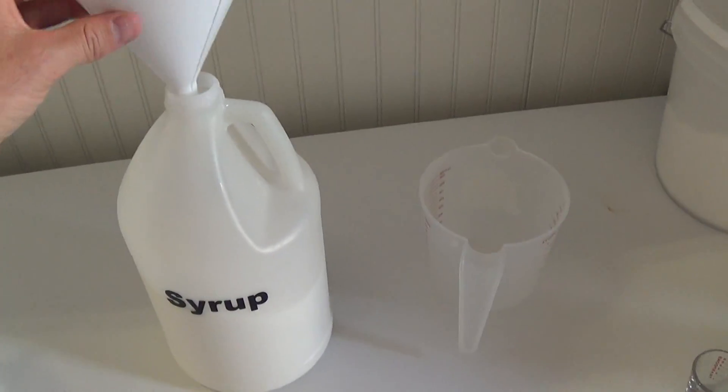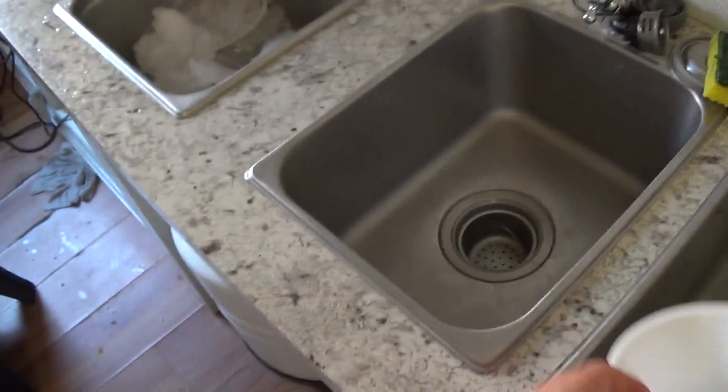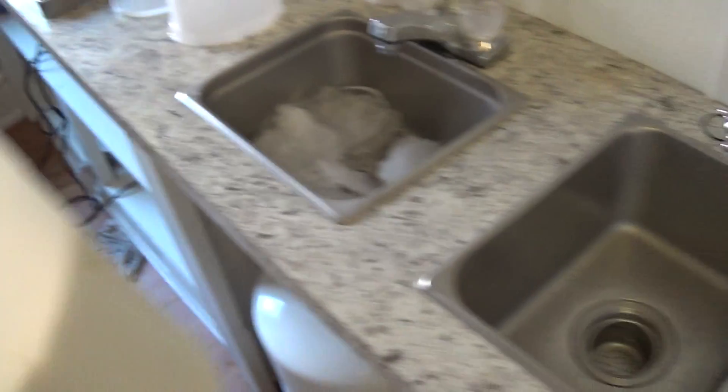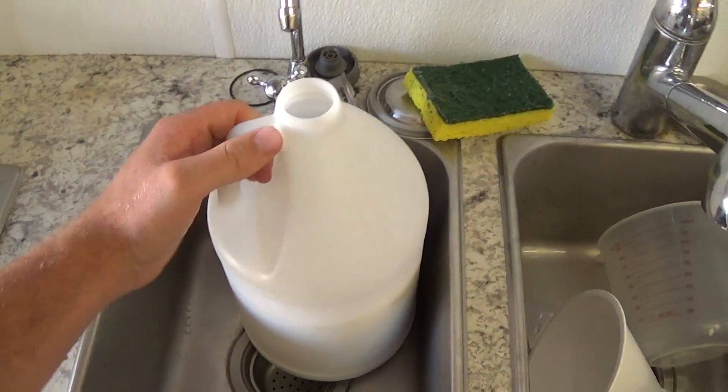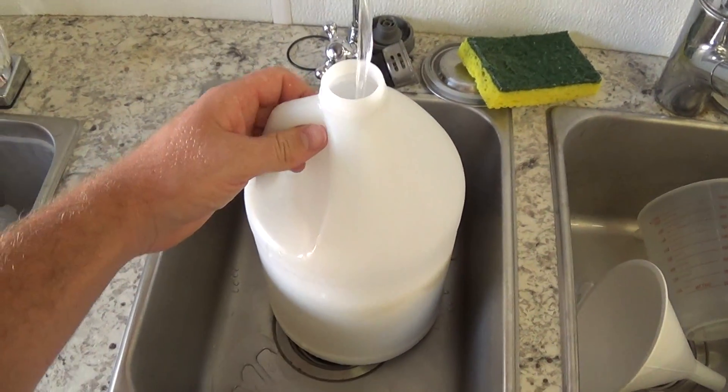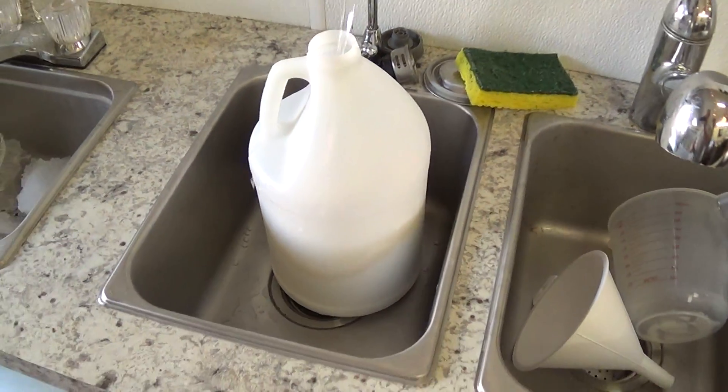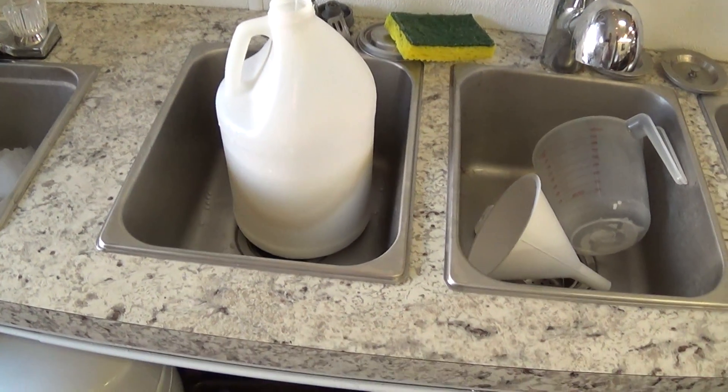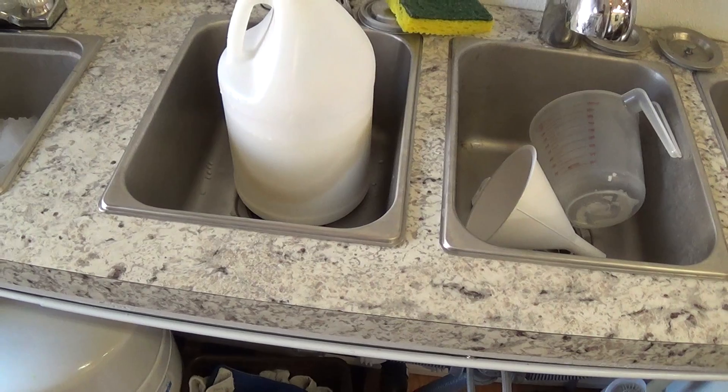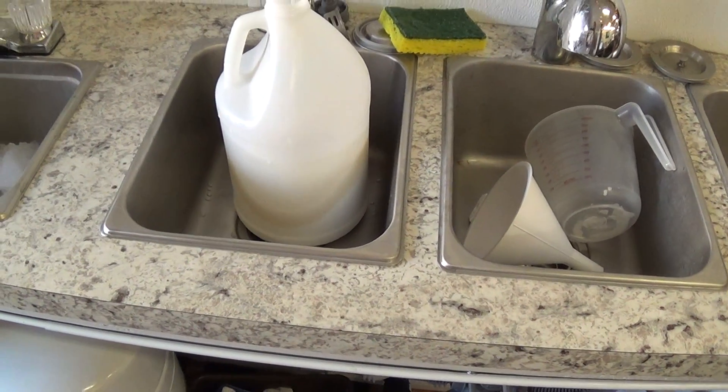So once that's all added, you put filtered water in. I like to mix it in the one gallon jug because then it's easy to mix the whole gallon at once, and it's easy to be able to still shake it.